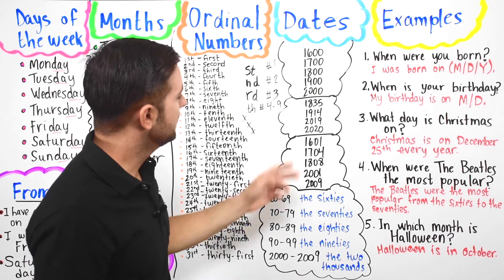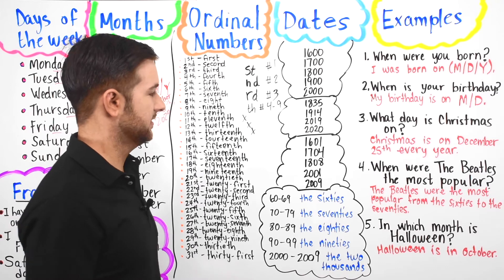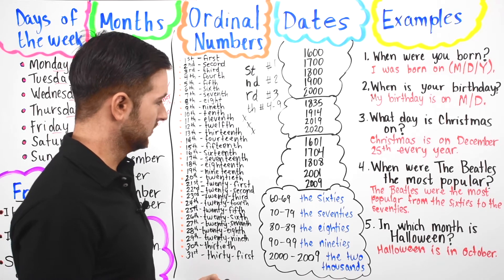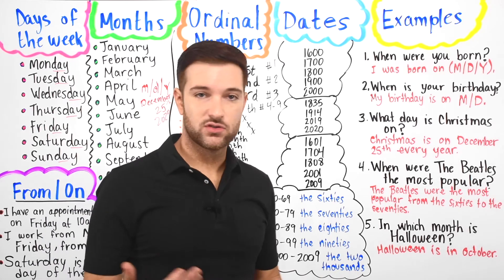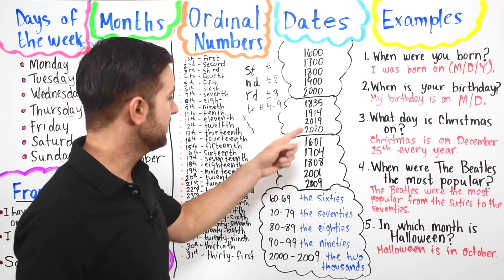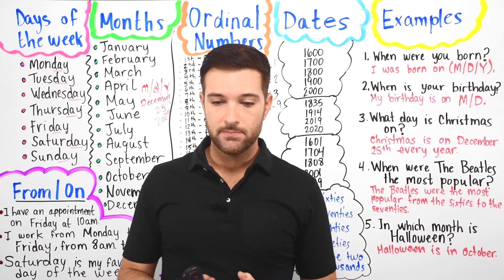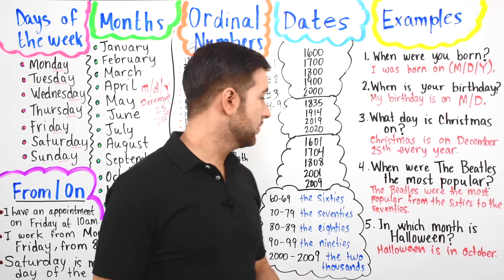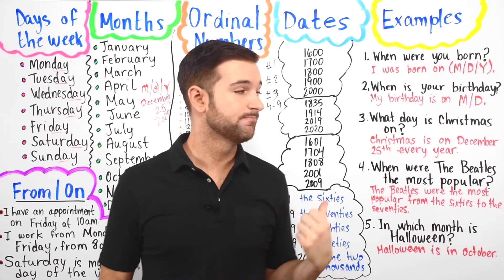You have years separated into two numbers: 1835, 1914, 2019, 2020. For years in the 2000s, you can say them in two ways. First, you can say them as two numbers — like 20-19 or 20-20. Or second, you can say the full number: 2019, 2020.